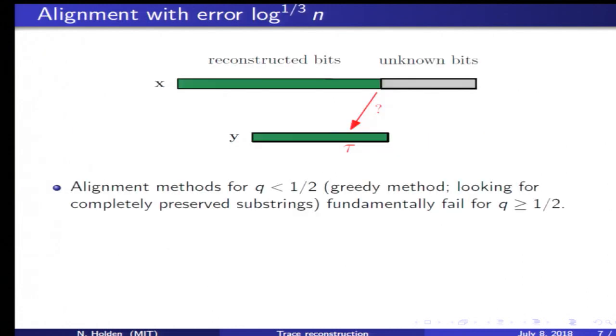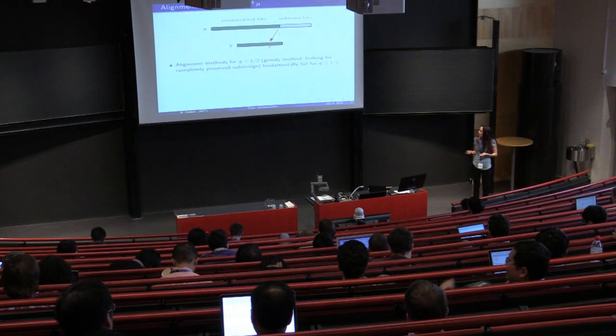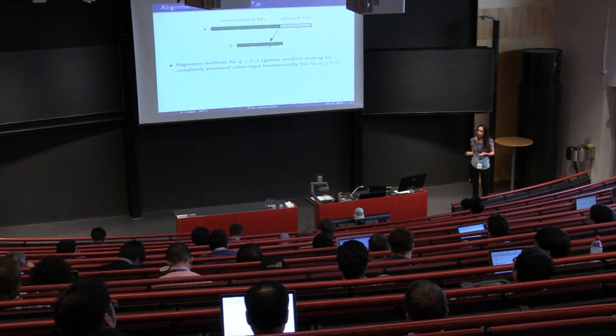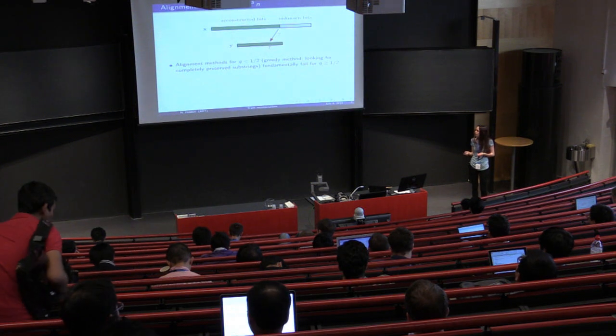When the deletion probability q is less than a half, alignment can be done by a greedy method, which is simply choosing tau to be the first possible position it could be. But this greedy method has a phase transition for q equals a half, so it fundamentally fails in our case.